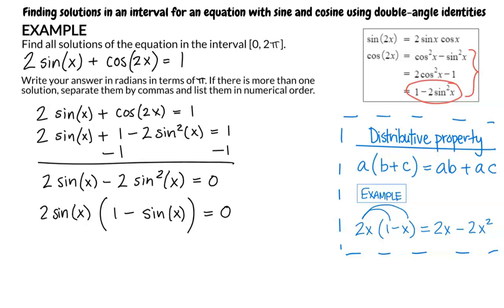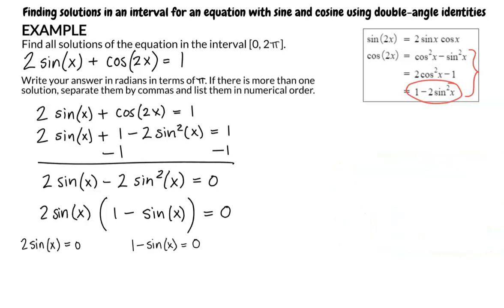After factoring, we write 2 sine of x times 1 minus sine of x equals 0. Can we set both 2 sine of x and 1 minus sine of x equal to 0 like we do with polynomial equations? Yes, that is exactly what we do. We have 2 sine of x equals 0 and 1 minus sine of x equals 0 and we need to solve each equation for x.